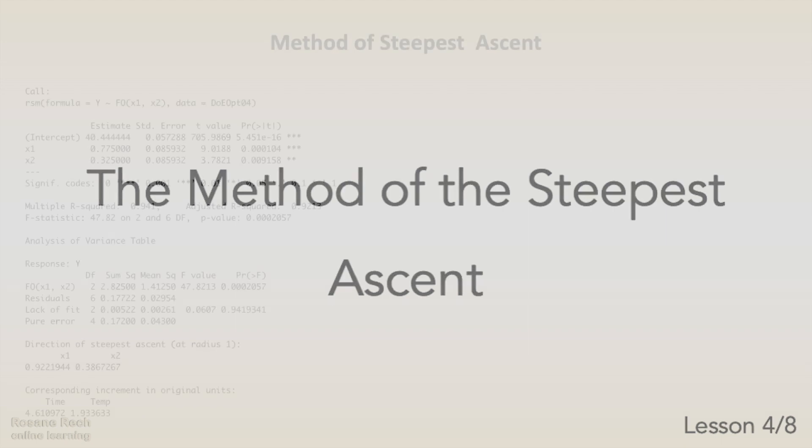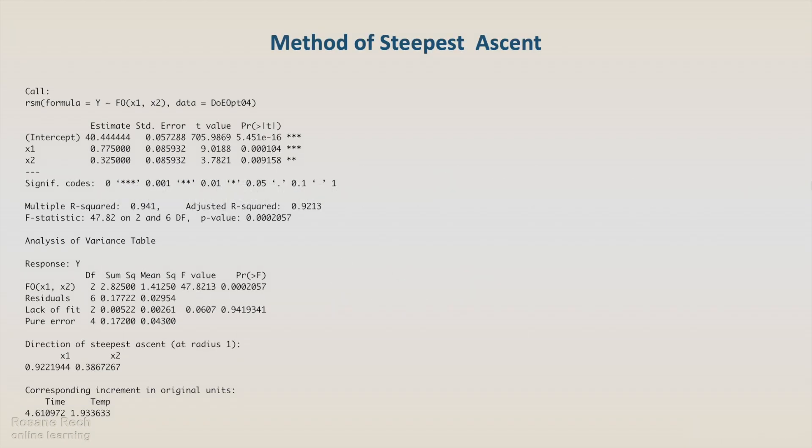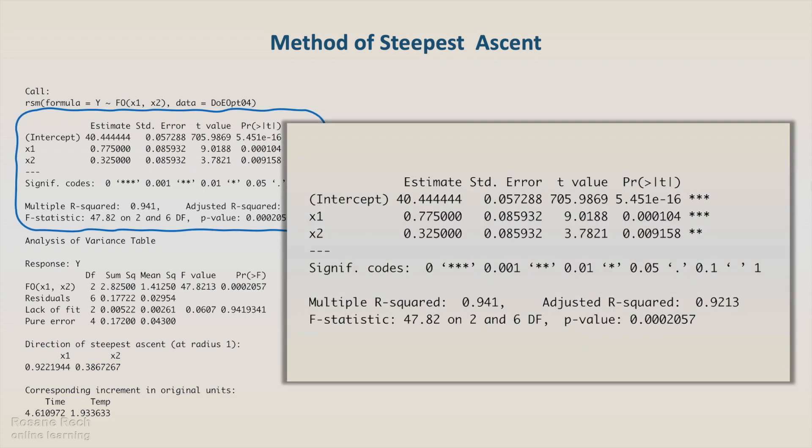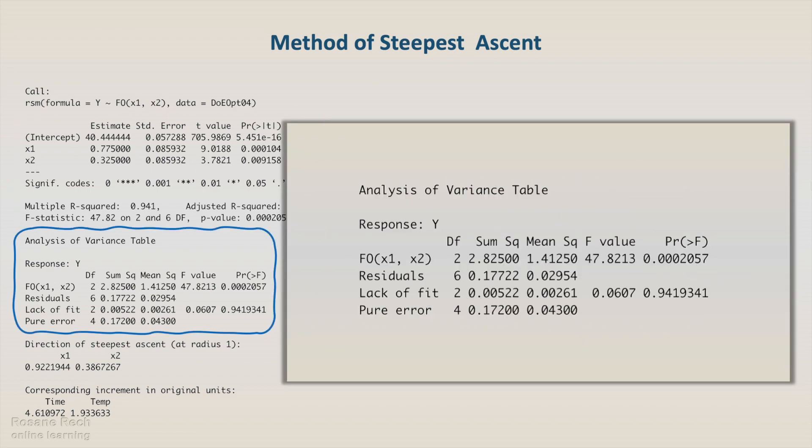Looking at the complete output of the RSM function for a first-order model, we can see the table with the regression coefficients, the analysis of variance of the model, both of which we have already discussed.